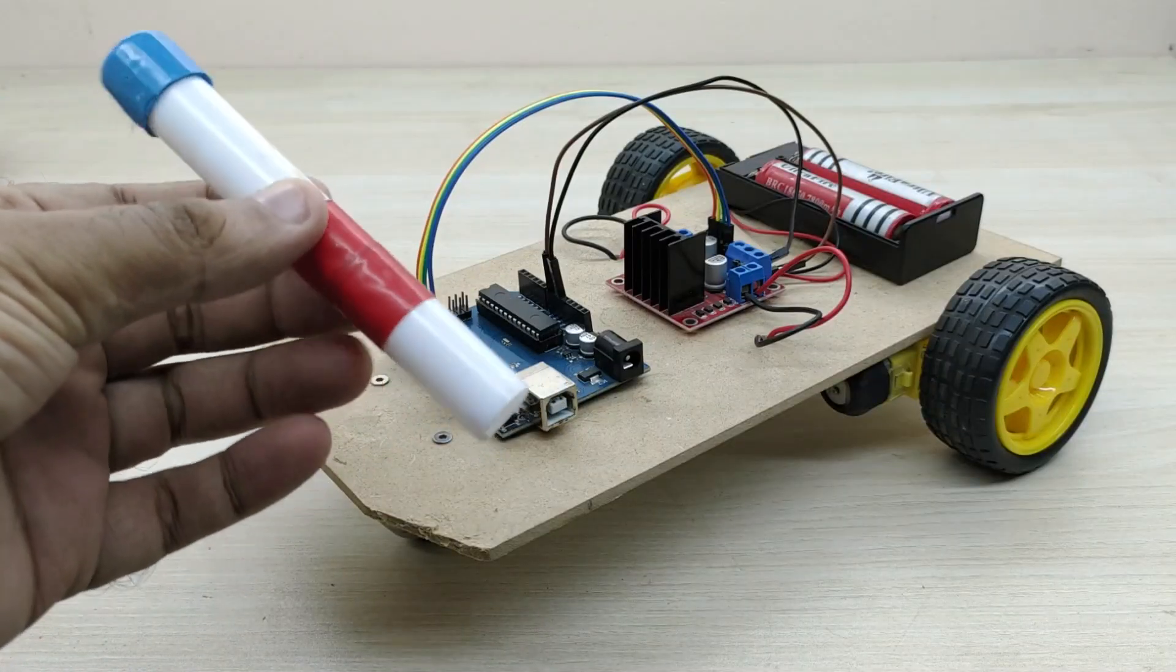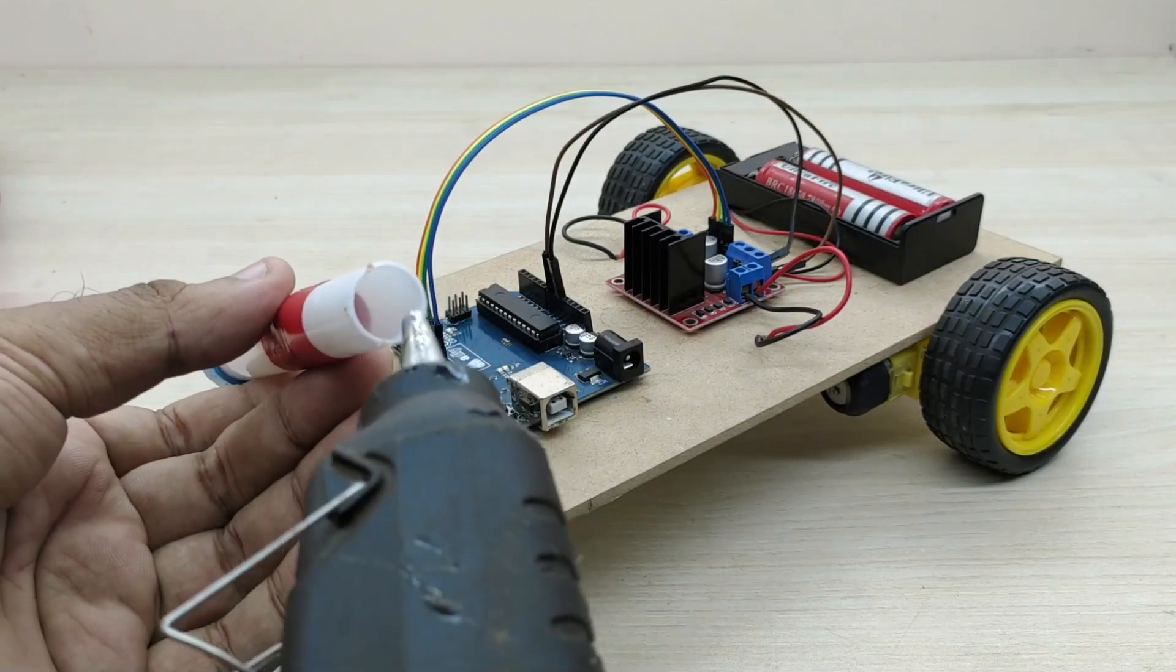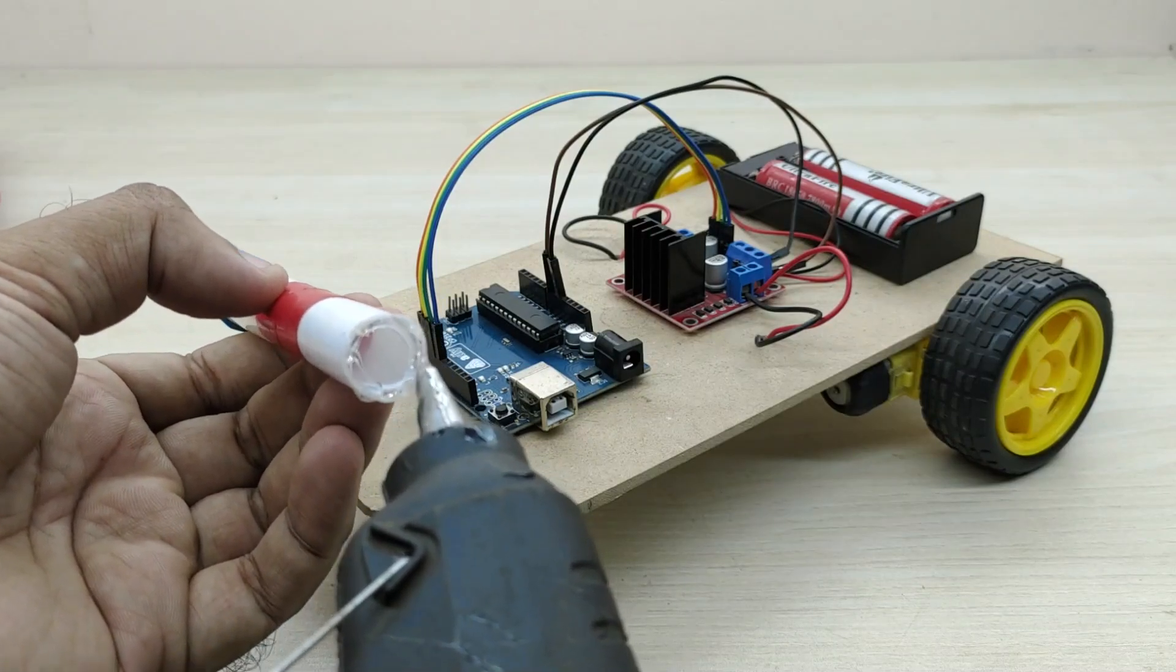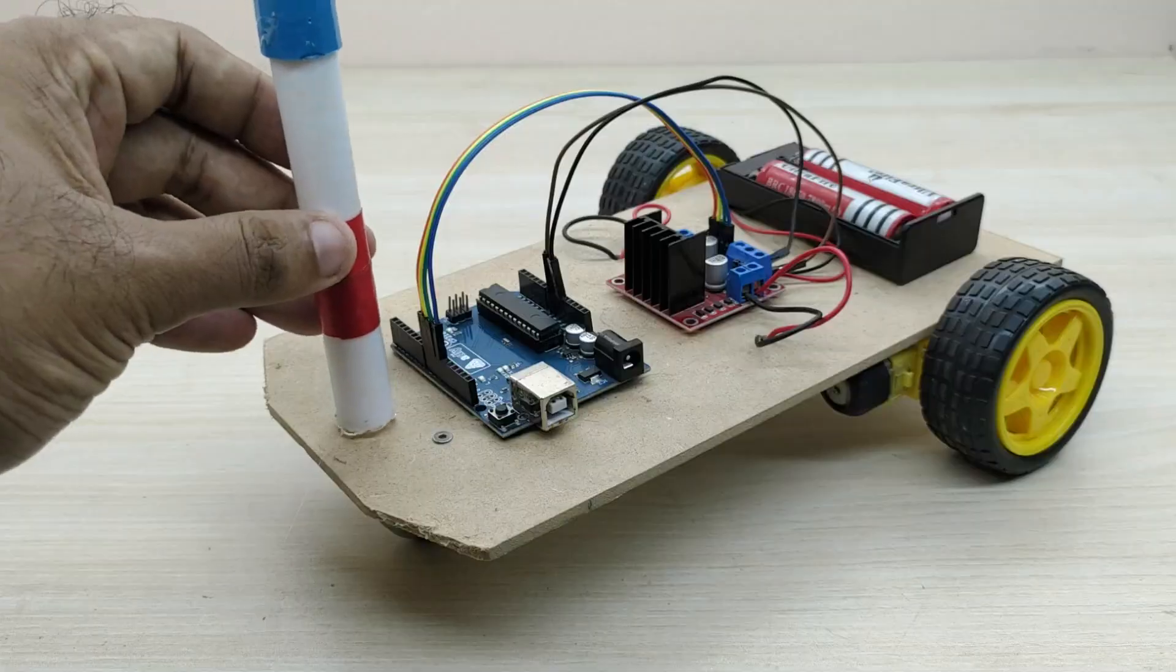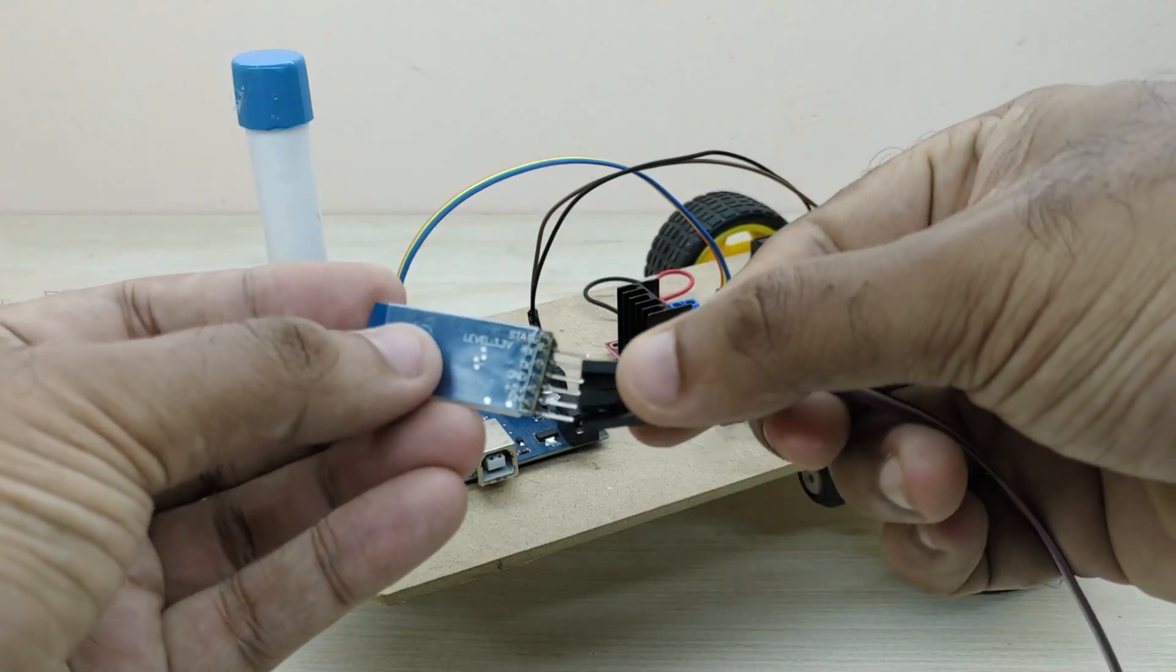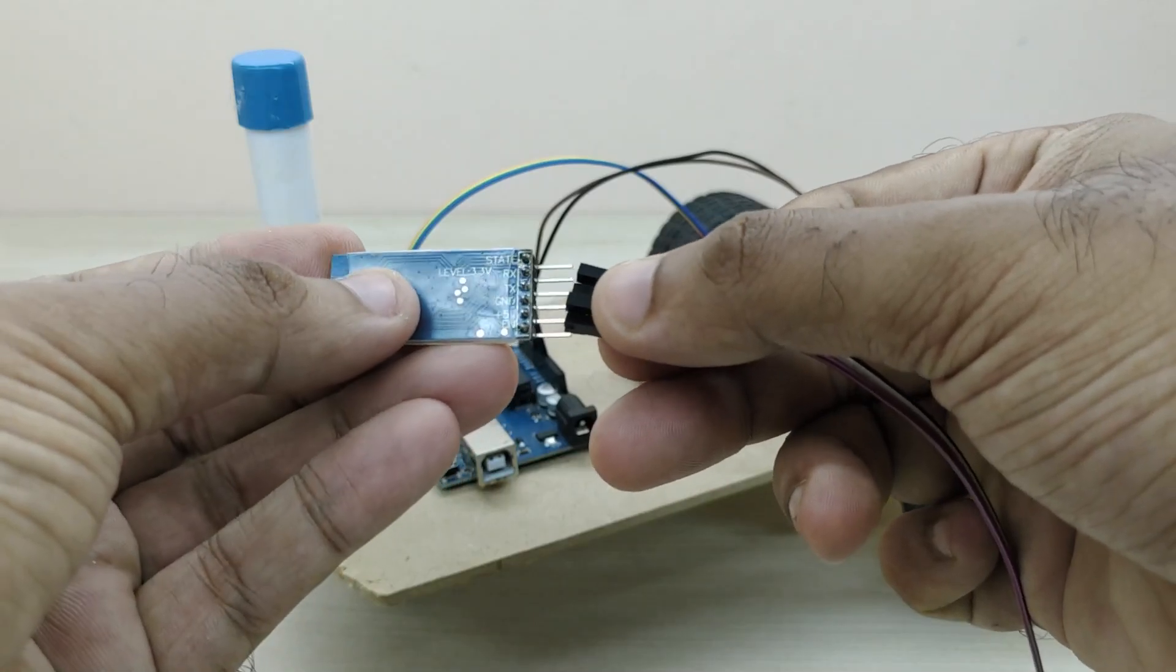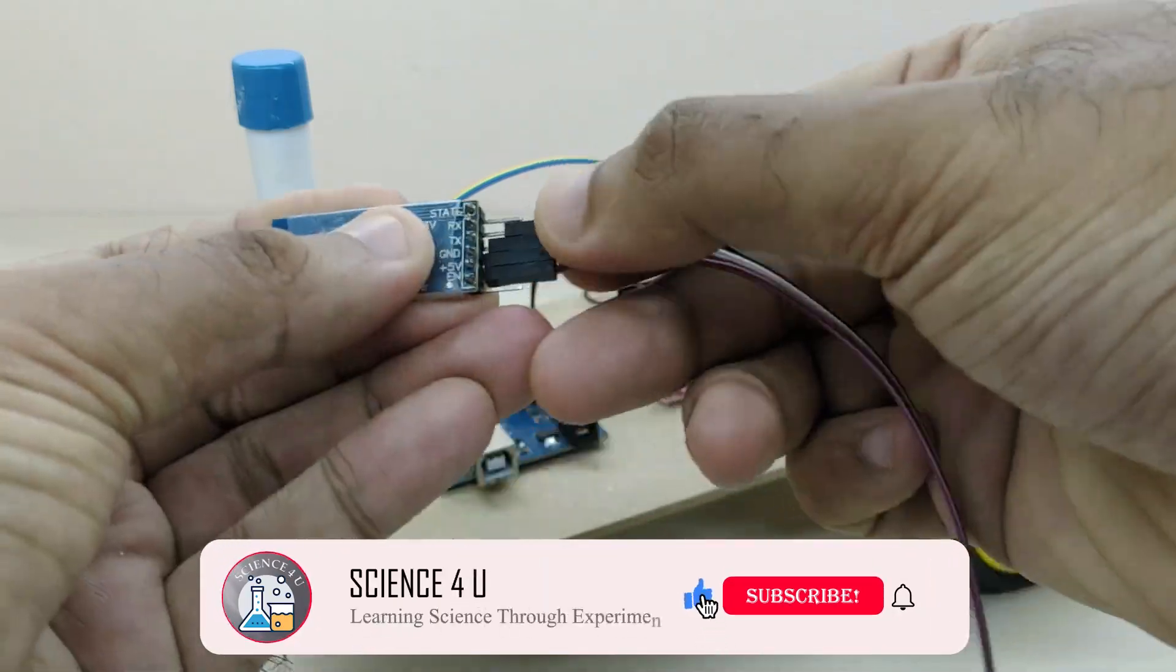Now, fix any piece of plastic pipe as shown. The Bluetooth module will be fixed on top of this pipe for better signal reception. Now, take the Bluetooth module and connect four jumper wires to the VCC, ground, TX and RX pins.